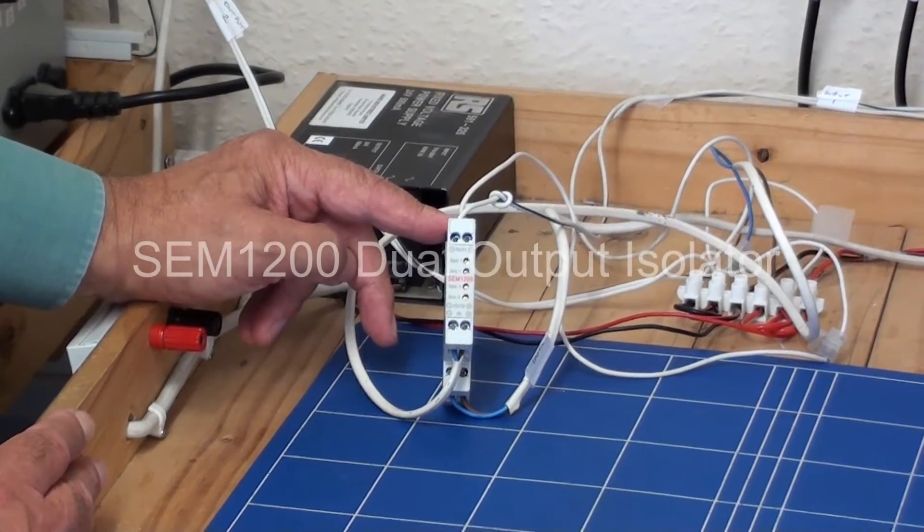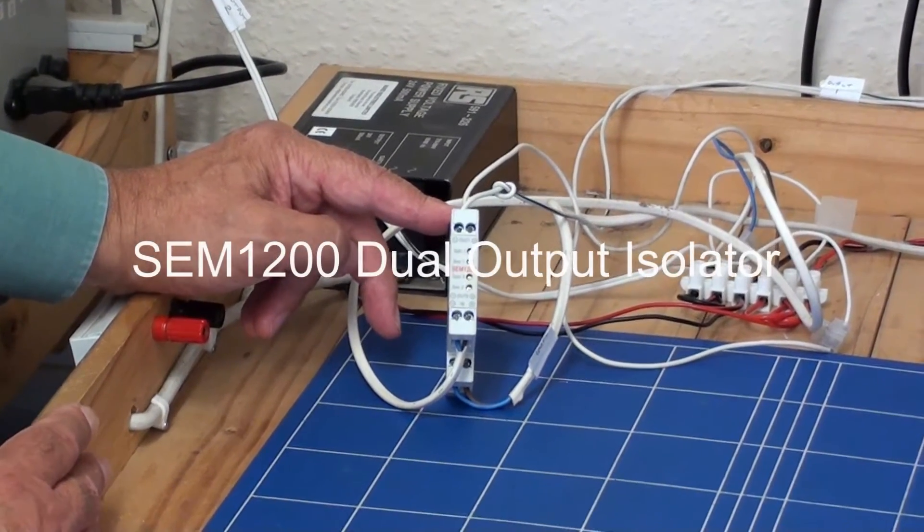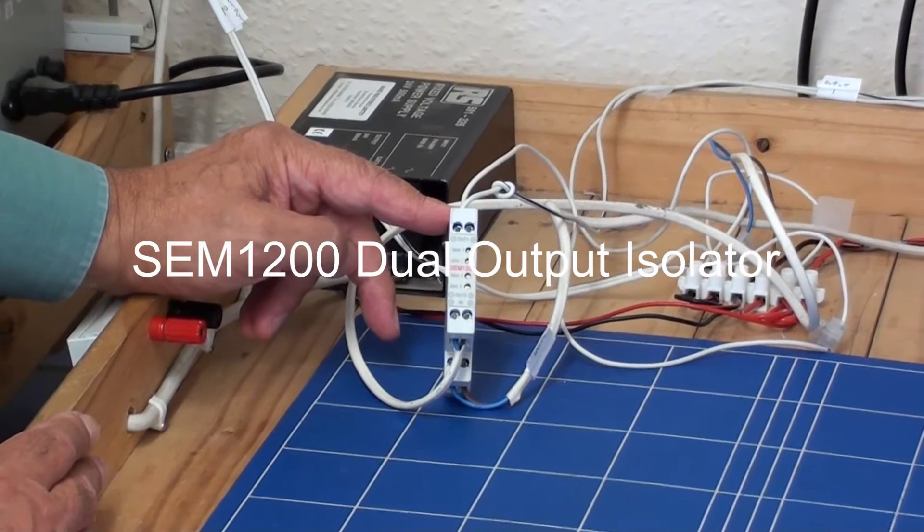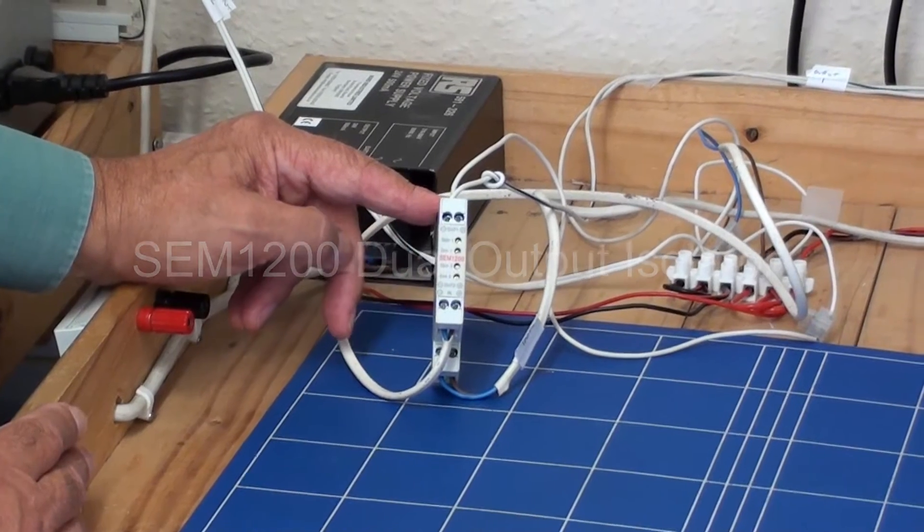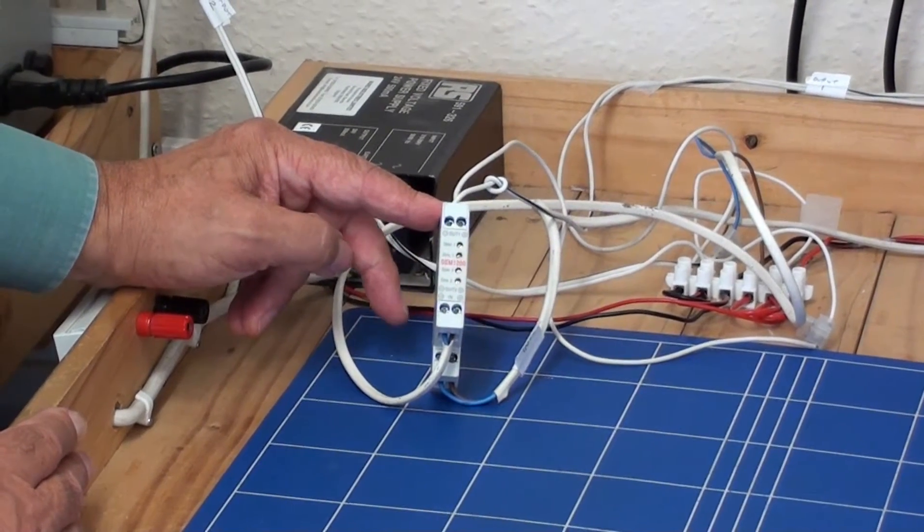The SEM1200 is a dual output isolator, providing two separate isolated current signals, 4-20mA, from a primary loop.